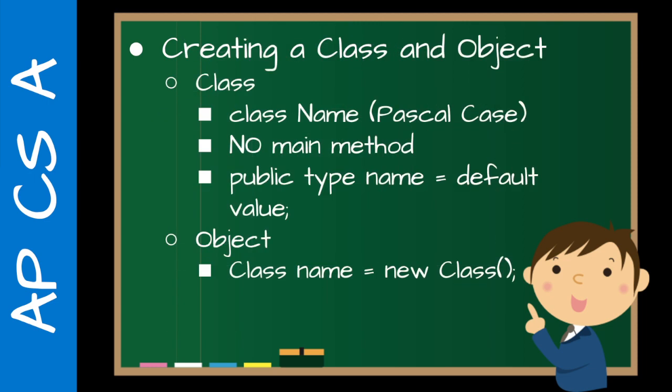So creating a class — students should already be familiar with class and public static void main. The class definition is very similar: class name in Pascal case, which is good to bring back up. The big difference is there's no main method — and I see it time and time again, students try to put a main method into a class that doesn't require it. The setup for an attribute is: public, the data type, the name of the variable, equals default value.